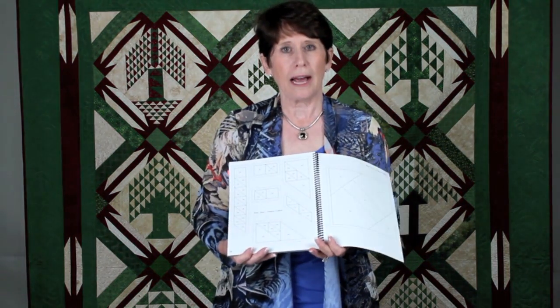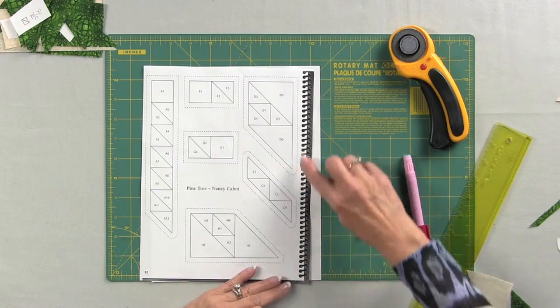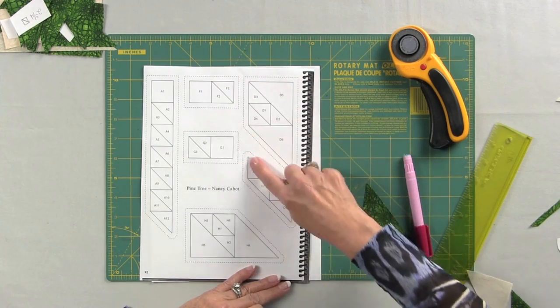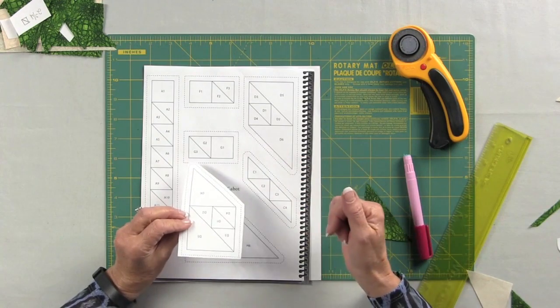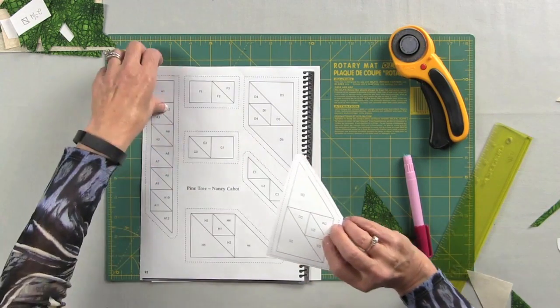So when you're paper piecing, these are your patterns. I recommend getting a spiral bound or a three ring binder because you want these patterns to lie flat. So what we're going to do first, I've made my copies. This is my pattern. What I'm going to do is trim this off an eighth to a quarter inch away. By doing that it gets rid of the bulk and it makes it easier when you're putting your pieces on.